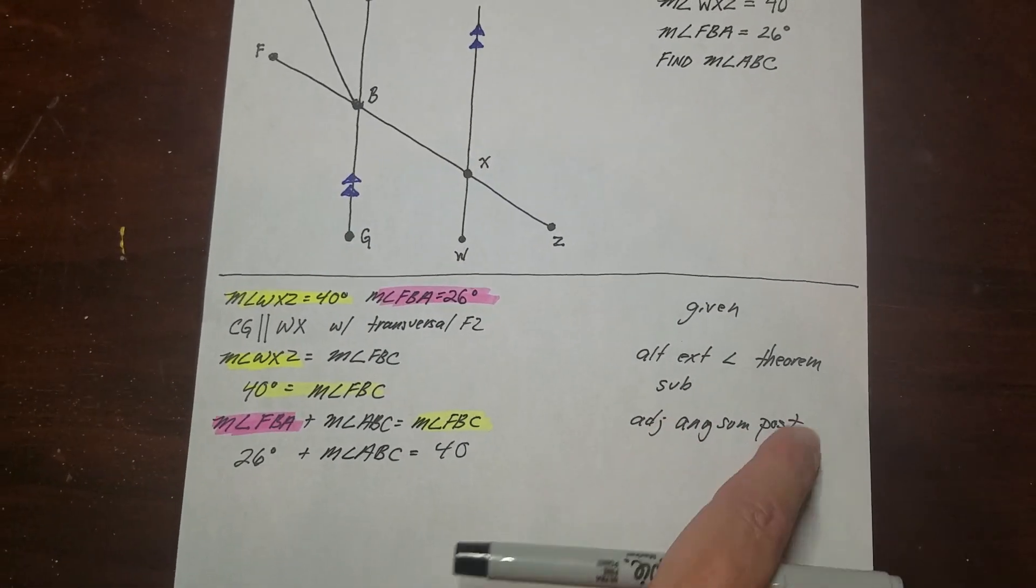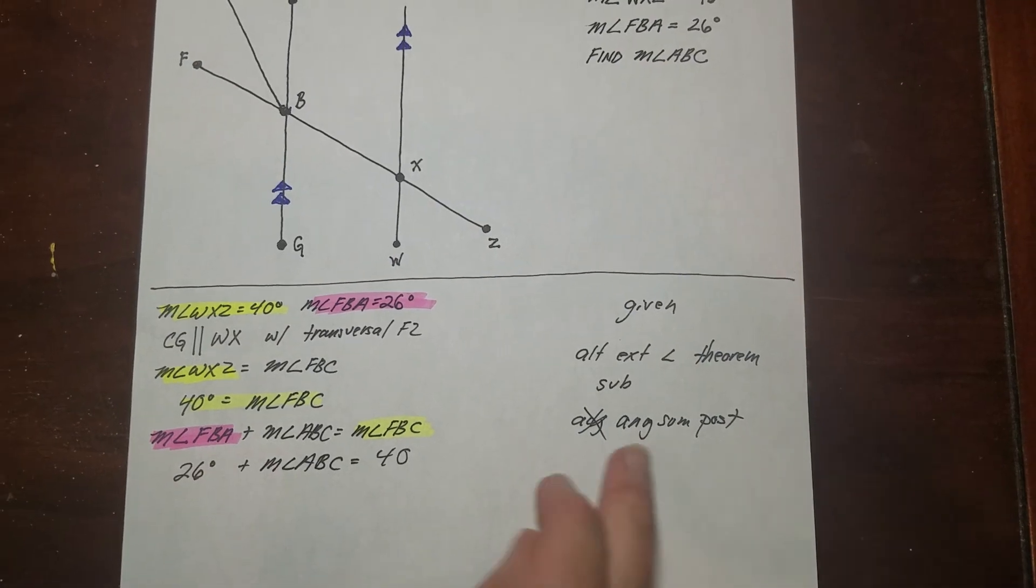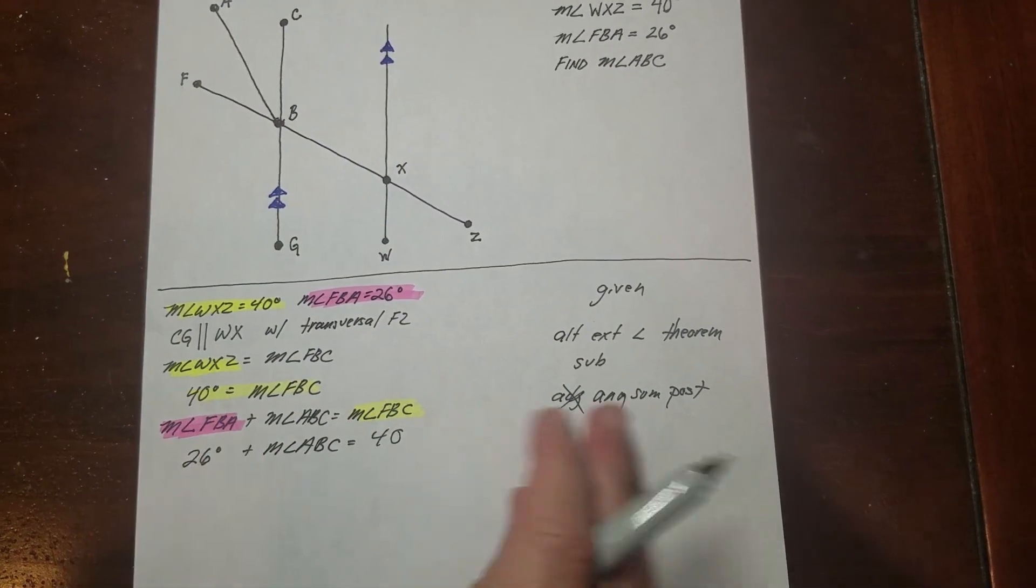So angle addition postulate says that these two angles add up to the bigger one. So that's why I wrote that. On this one right here, the substitution I used.